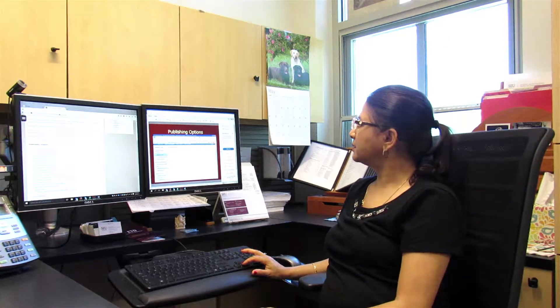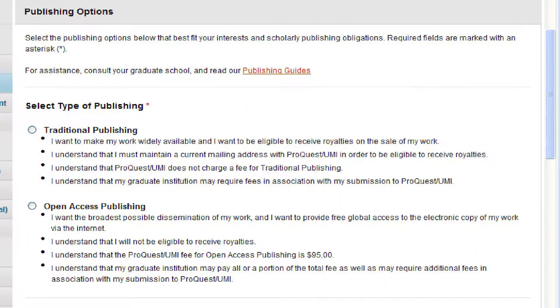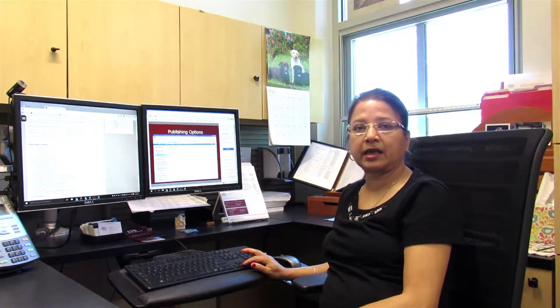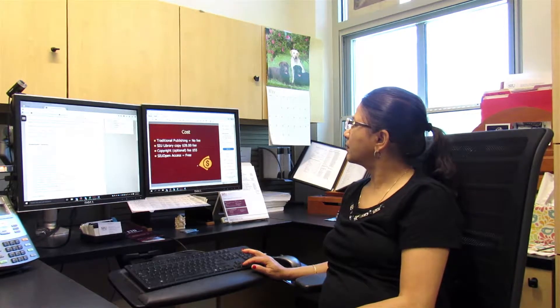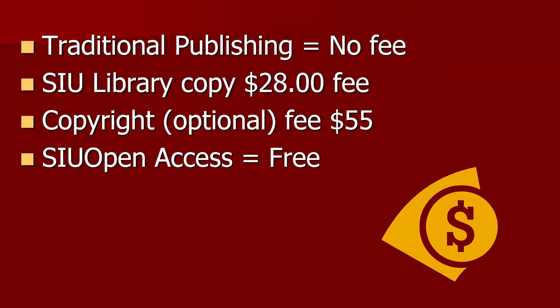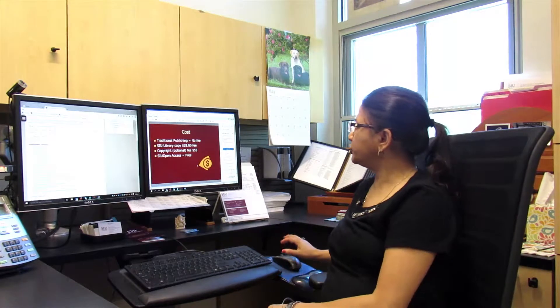Here is a screen in ProQuest showing the embargo options — you choose yes or no. If you choose no due to patent pending, you then choose six months, one year, two years, or enter a specific date. For publishing options, I would suggest choosing traditional publishing, because open access publishing costs extra through ProQuest. If you do want open access, SIUC has its own open access option which you can use for free. The cost for traditional publishing through ProQuest has no fee, although the SIU library copy requires $28 for an unbound copy. The copyright registration fee is $55, which is optional. SIU open access is free.